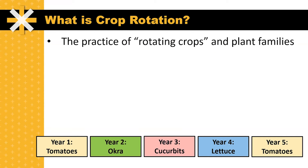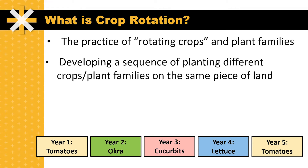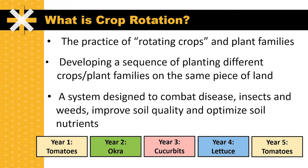Crop rotation is the practice of rotating or moving crops and plant families throughout the field. You're essentially developing a sequence of planting different crops and plant families on the same piece of land. This system can be designed to combat disease, insects and weeds, and improve soil quality and optimize soil nutrients.